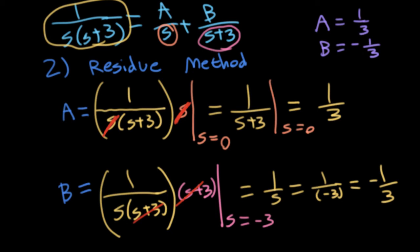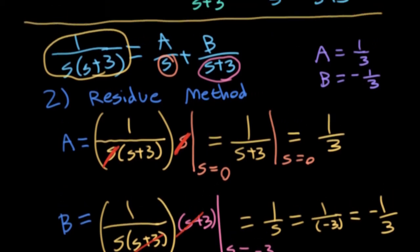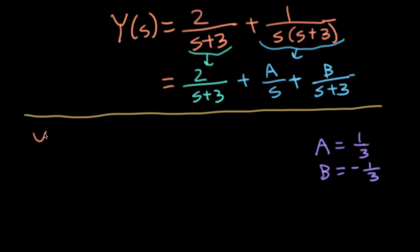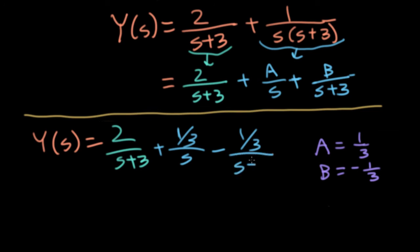So now I can take this A and B and substitute it back into our Laplace transform. So let me write Y(s) is equal to 2 over s plus 3 plus 1 third over s. And you'll see in a second why it's kind of convenient to have a 1 third up here instead of having a 3 in the denominator. minus 1 third over s plus 3. So that's just plugging in our answers for A and B. But I'm not done yet. I still need to invert this Laplace transform.